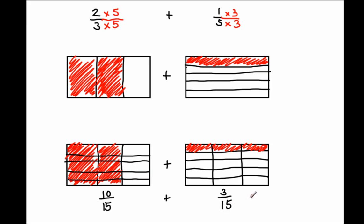Now I can add my 15ths. Do I have the same unit, same denomination, same denominator? Yes — 15ths. So my answer will be in 15ths. All I'm adding is 10 plus 3 of these things called 15ths. What's 10 plus 3? 13. 13 what? 13 15ths. And that is how we create fractions with the same denominators and add fractions when they do not have the same denominators.